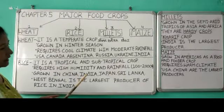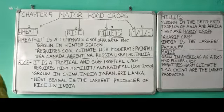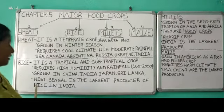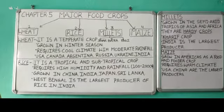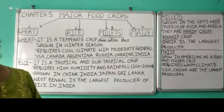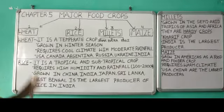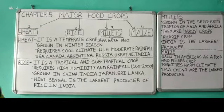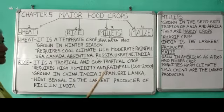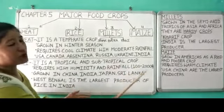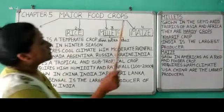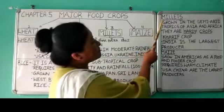The major areas where rice is grown are China, India, Japan, and Sri Lanka. In India, West Bengal is the largest producer of rice. Rice is mostly grown in the summer season because it requires heavy rainfall of around 100 to 200 centimeters, or even up to around 300 centimeters.